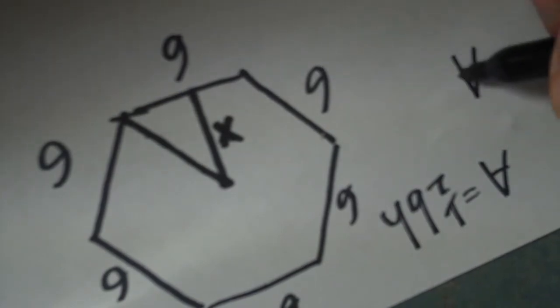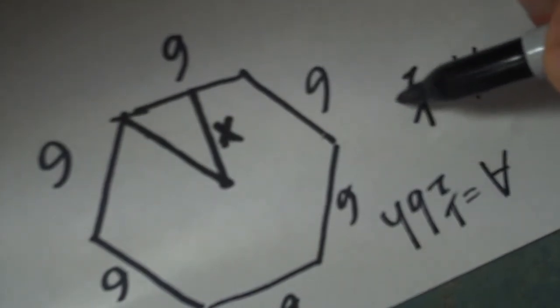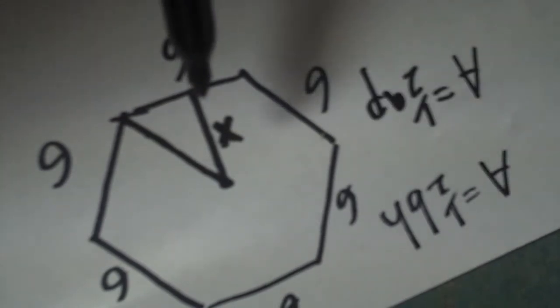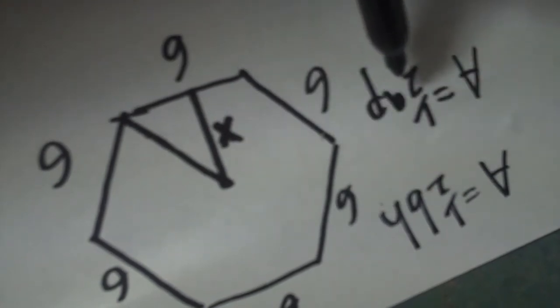Or you could just use the area of a regular polygon formula, which is one-half apothem times perimeter. But either way, you still need this. If you're using this formula, it would be the height, and if you use this, it is the a here.